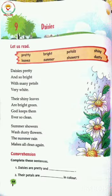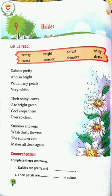Now let's start our poem. 'Daisy is pretty and so bright, with many petals very white.' Daisy flower hoti hai, woh pretty hoti hai, sundar hoti hai. And so bright — bhoat bright hoti hai, chamakti hoti hai. With many petals — uski bhoat saari petals hoti hai. Beech mein flower hai, is ki pati hai, choti choti white color ki, round shape mein — woh petals hai. Very white — safed rang ki hoti hai.